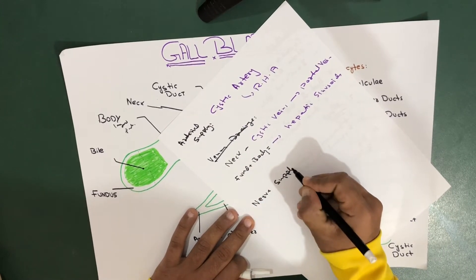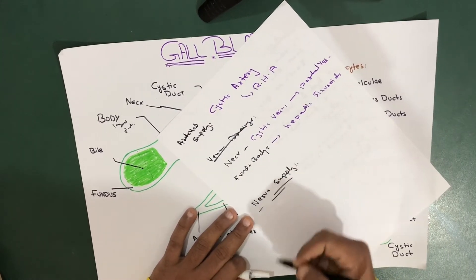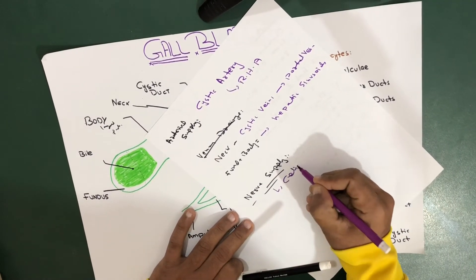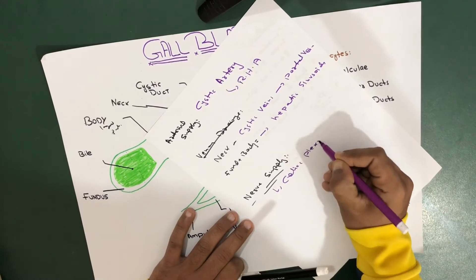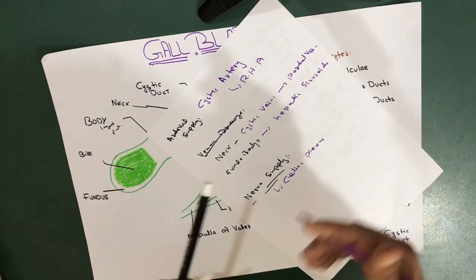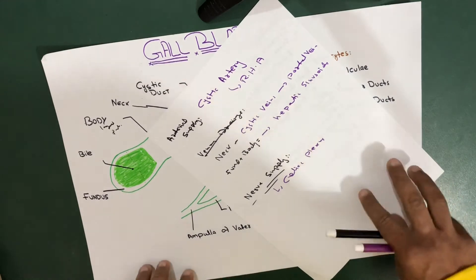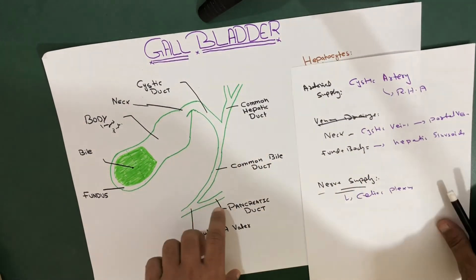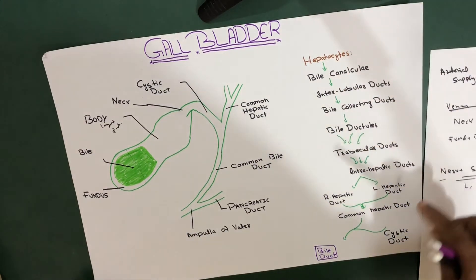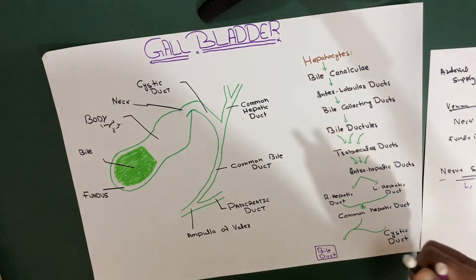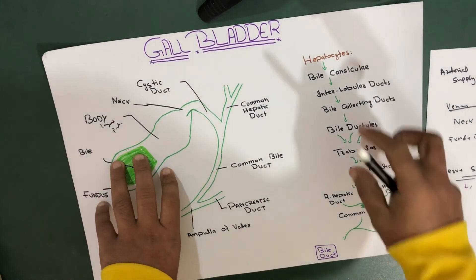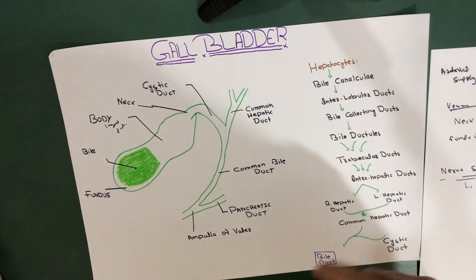For nerve supply, the gallbladder receives parasympathetic and sympathetic fibers from the celiac plexus - very simple. That's it regarding the introduction to the gallbladder. In the next lecture we'll be talking about the biliary tree. Keep watching and see you in the second lecture.